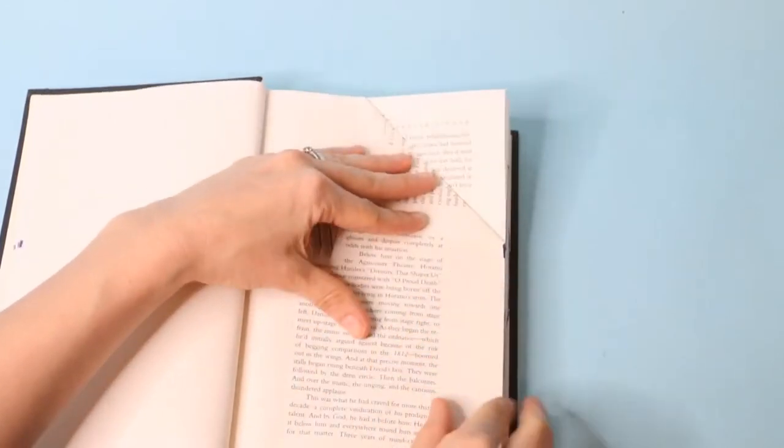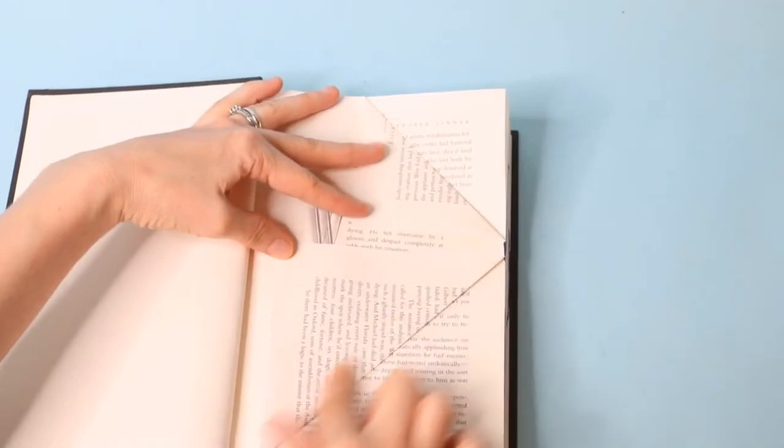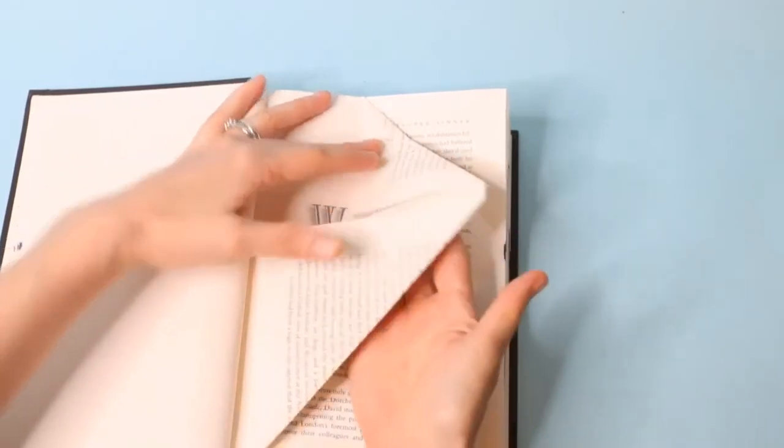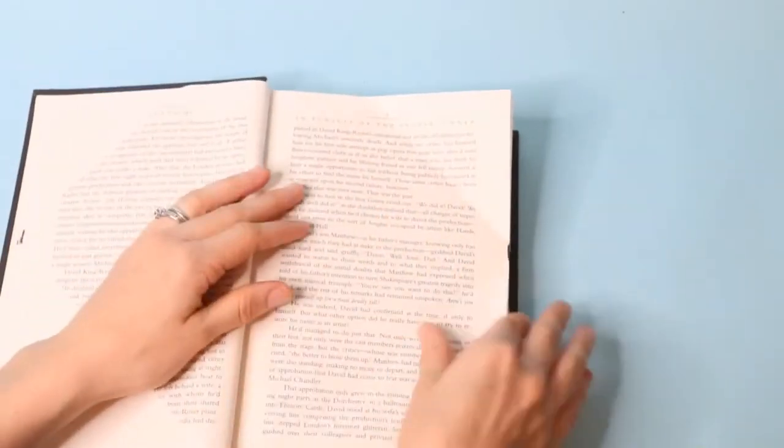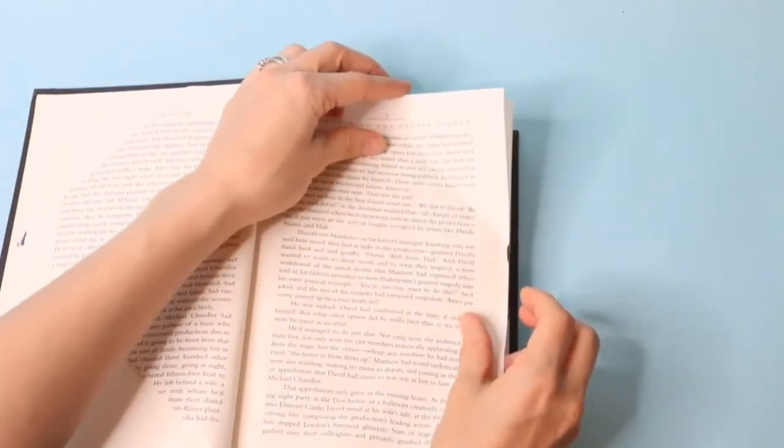Then you'll fold the corner up from the bottom again making the right corner of the triangle meet the bottom of the pencil mark. You'll do this for every page using the pencil mark to guide how far down you fold.